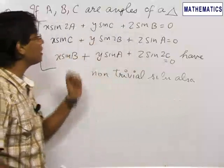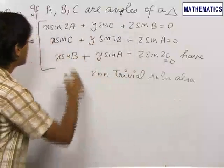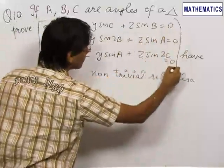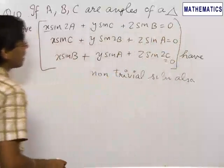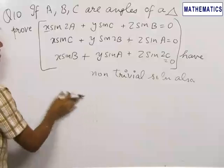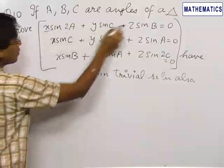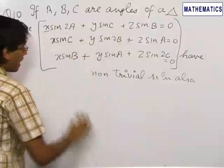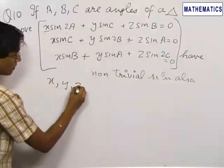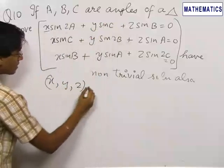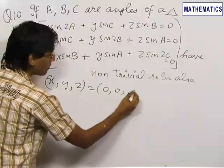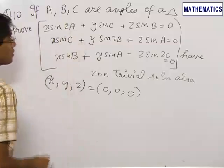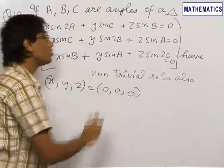In order to prove that these three equations have a non-trivial solution, since the coefficients here are 0, 0 and 0, we can very clearly see that x=0, y=0, z=0 satisfies all three equations. Hence, these equations have a trivial solution, but we need to prove they also have a non-trivial solution.